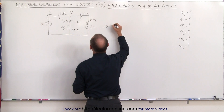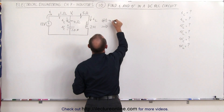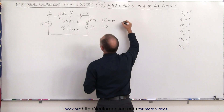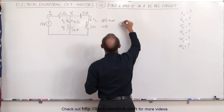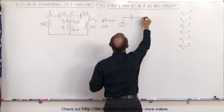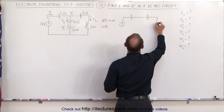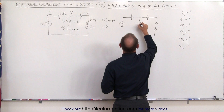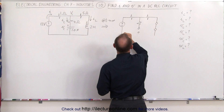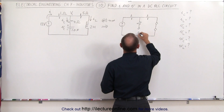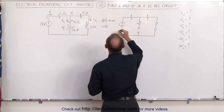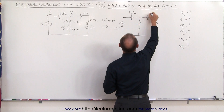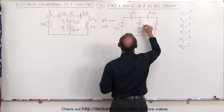At steady state — in other words, at T approaching infinity, that's another way of saying when everything settles down — the circuit changes to the following. We still have the resistors. We have a second resistor here, and the inductor will now be replaced simply by a short. Here we have another resistor, but the capacitor will now be replaced by an open. And that will be the equivalent circuit at steady state. We still have 12 volts on the source, a 1 ohm resistor, a 5 ohm resistor, and a 4 ohm resistor.